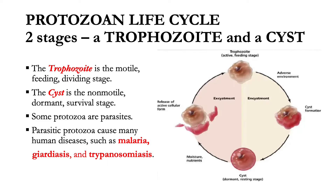In some ways, like the presence of a thick outer wall, cysts are like bacterial spores. Some protozoa are parasites that break down and absorb nutrients from the body of the host. Many parasitic protozoa are pathogens, causing human diseases such as malaria, giardiasis, and trypanosomiasis.